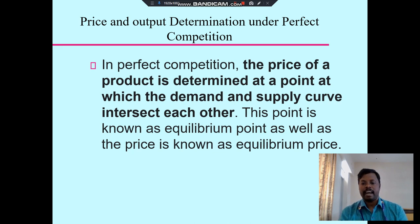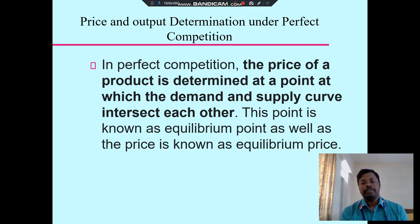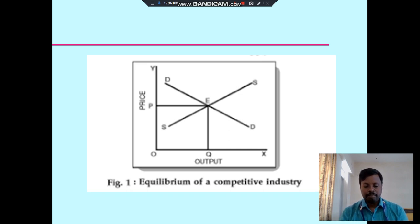Price and output determination under perfect competition: the price of a product is determined at the point where the demand and supply curves intersect. This point is known as the equilibrium point and the price at this point is known as the equilibrium price. At this point, market price is fixed where demand equals supply.